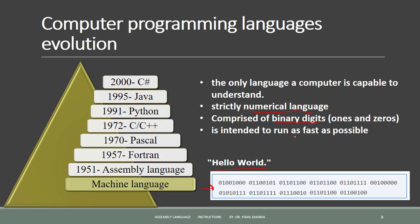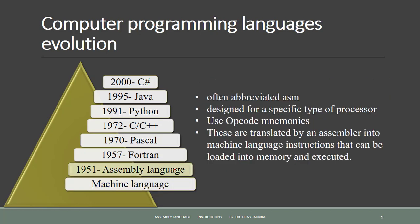It is intended to run as fast as possible. Assembly language is a low-level programming language designed for a specific type of processor, often abbreviated as .asm. Assembly language instructions usually consist of an opcode mnemonic followed by a list of data arguments or parameters. These are translated by an assembler into machine language that can be loaded into memory and executed.